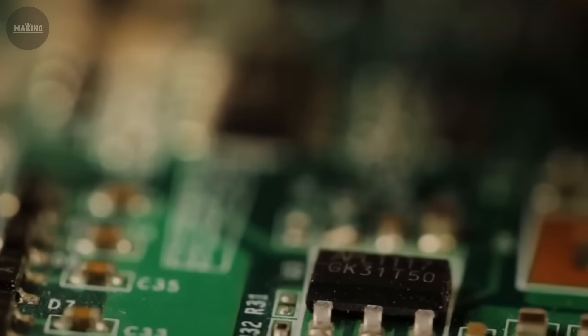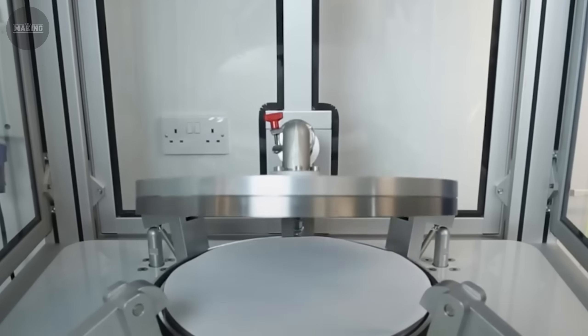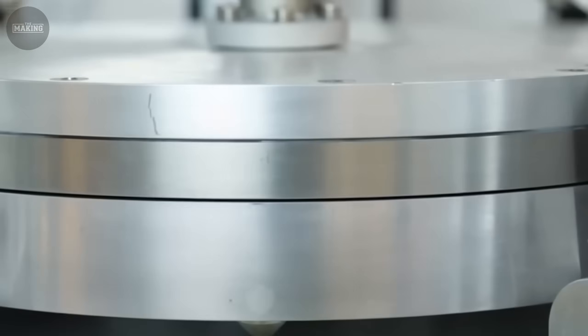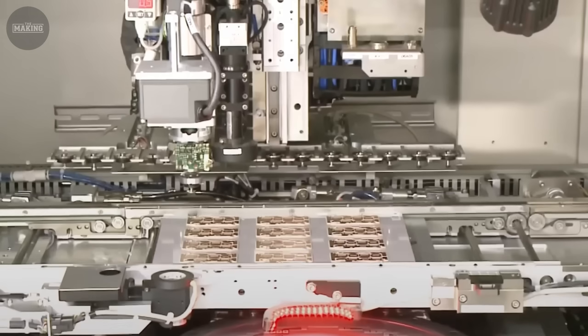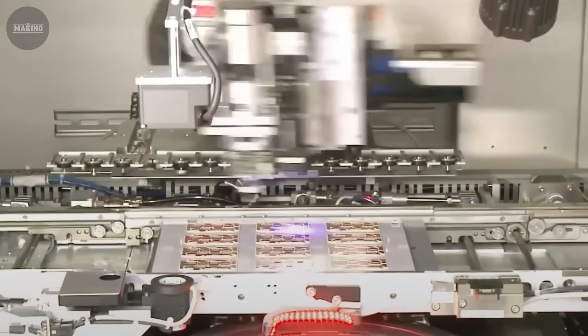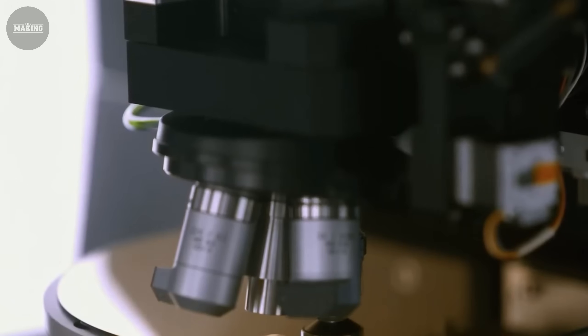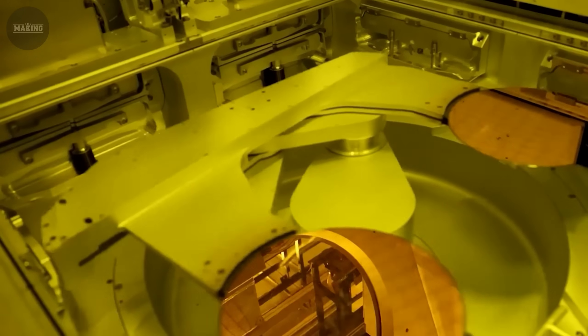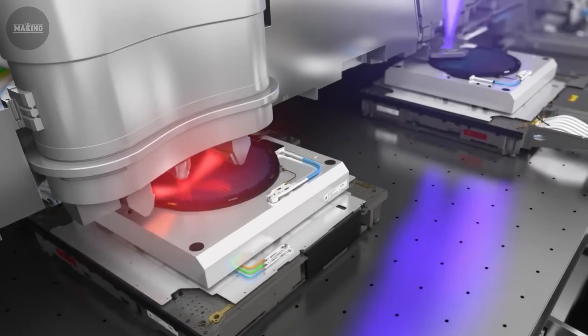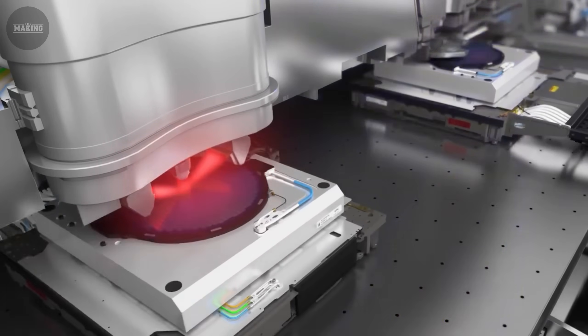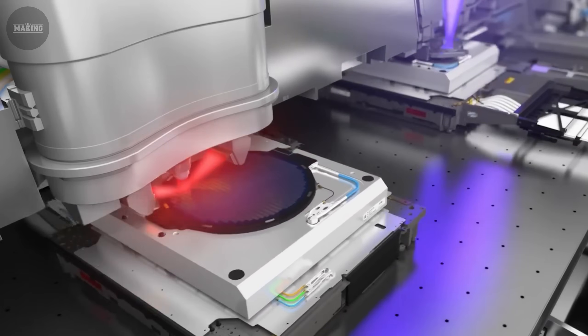The light passes through masks containing the circuit patterns, projecting them onto the wafer like a high-tech photocopier. But here's the incredible part. The positioning must be accurate to within 0.5 nanometers. That's like hitting a golf ball into a hole the size of an atom from 200 miles away. Each chip requires over 100 different mask layers, building up the circuits like a three-dimensional city. One misalignment ruins months of work and costs millions of dollars.